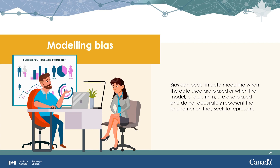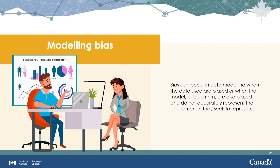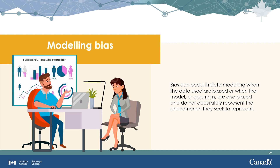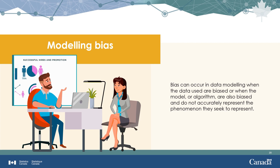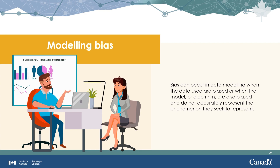Modeling bias can occur when the data used are not representative or when the model or algorithm is also biased. For example, if an algorithm is trained on historical data showing successful hires were mostly men, it will continue to suggest men for future roles. A biased algorithm might also pre-filter results by excluding candidates with last names containing characters not present in the English alphabet.